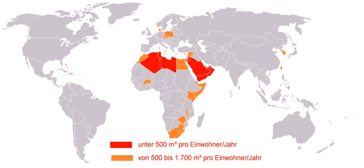Treaties between nations may enumerate policies, rights and responsibilities. For instance, a treaty between Poland and Germany establishes cooperation on water resources management, providing supply of drinking water of good quality, protection of surface water, supply of water to agriculture, and the fight against water pollution. The Permanent Court of International Justice adjudicates disputes between nations, including water rights litigation.